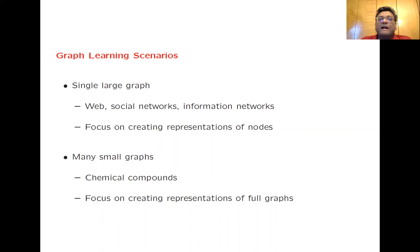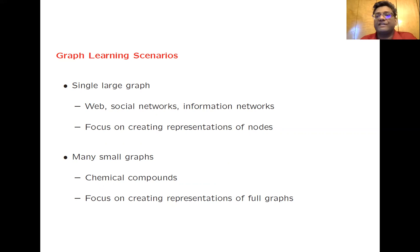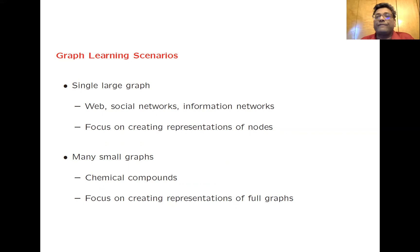The second graph learning scenario is that of many small graphs. One example is that of chemical compounds. In this case, the focus is creating a representation of the entire graph. For example, you may want to create a multidimensional representation of a particular type of molecule, say a benzene molecule, once you represent it as a graph.